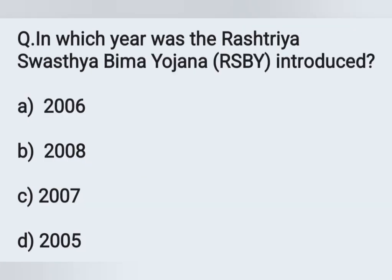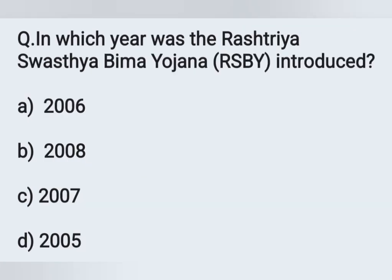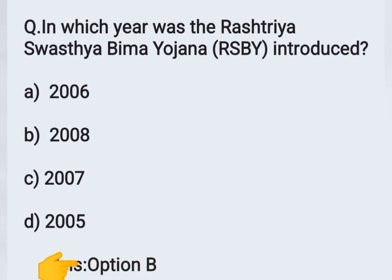The next question: In which year was the Rashtriya Swasthya Bima Yojana (RSBY) introduced? Option A: 2006, Option B: 2008, Option C: 2007, Option D: 2005. The RSBY program provides health insurance for below-poverty-line families, and it was launched in the year 2008. Option B is the correct answer.